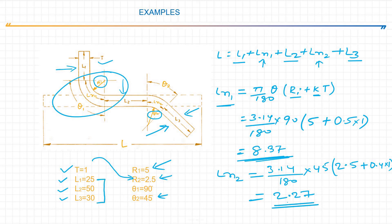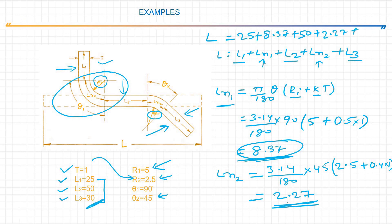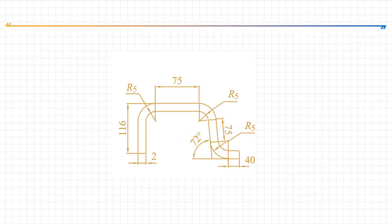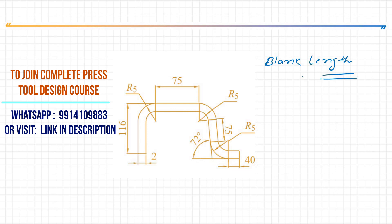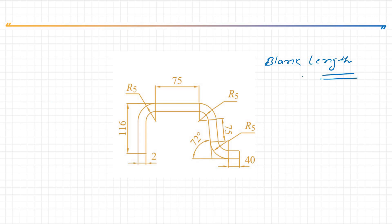Finally, the total blank length is: L = L1 + LN1 + L2 + LN2 + L3 = 25 + 8.37 + 50 + 2.27 + 30 = 115.64 mm. This is the total blank length. A practice problem is given — calculate the blank length and write your answer in the comment box. See you in the next session. Don't forget to like and subscribe. Thank you.